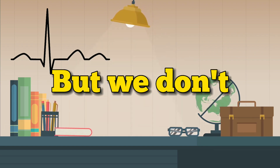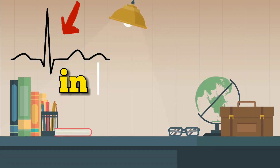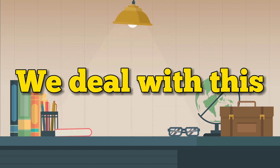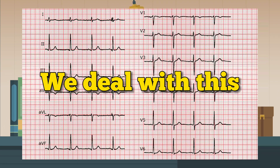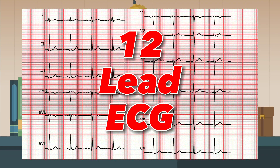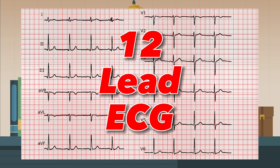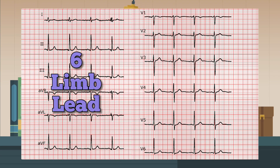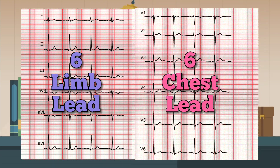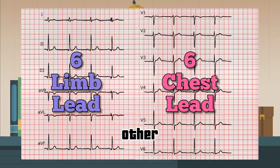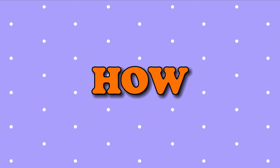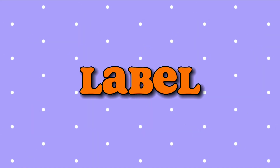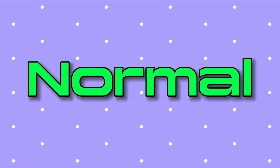But we don't deal with this in real life — we deal with the 12-lead ECG: 6 limb leads and 6 chest leads, and they are all different from each other. So how do we label an ECG as normal?